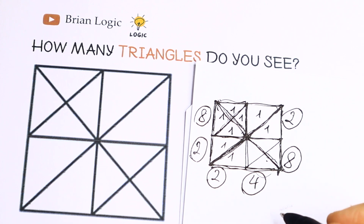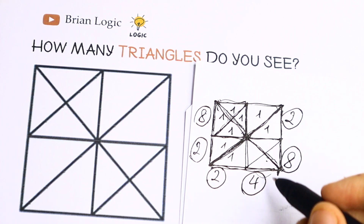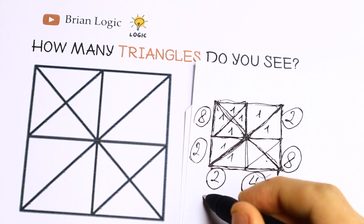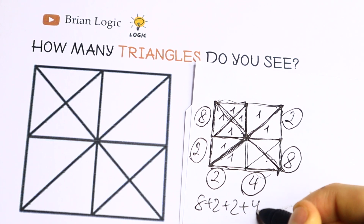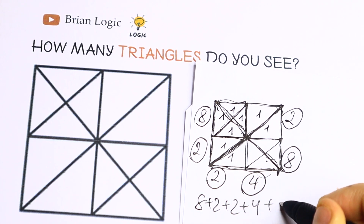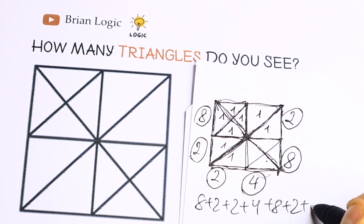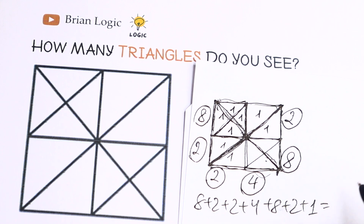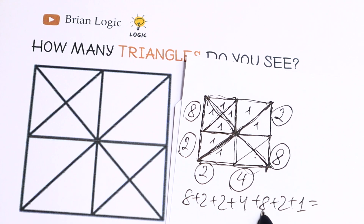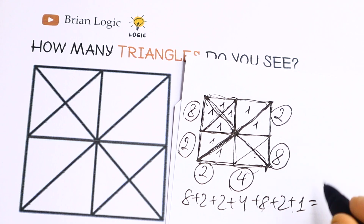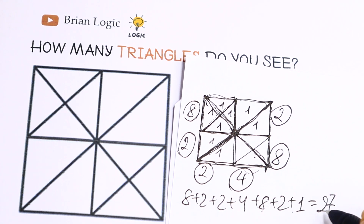So let's add all of these triangles. We will have 8, 2, 2, 8, plus 2, plus 2, plus 4, plus 8, plus 2, and the main one plus 1. How many triangles will we have? Let's count all of these: we will have 10, 12, 16, 24, 26 and 27. So I count 27 triangles.